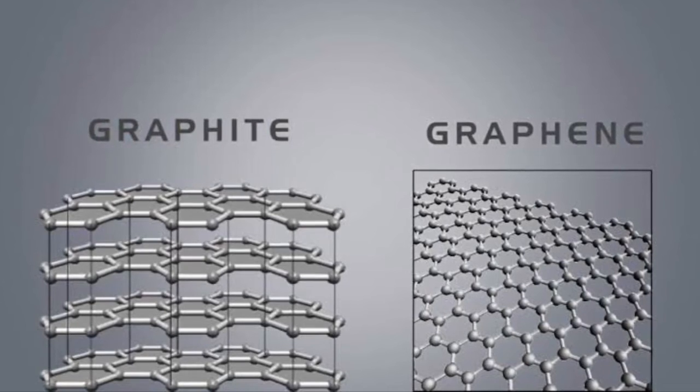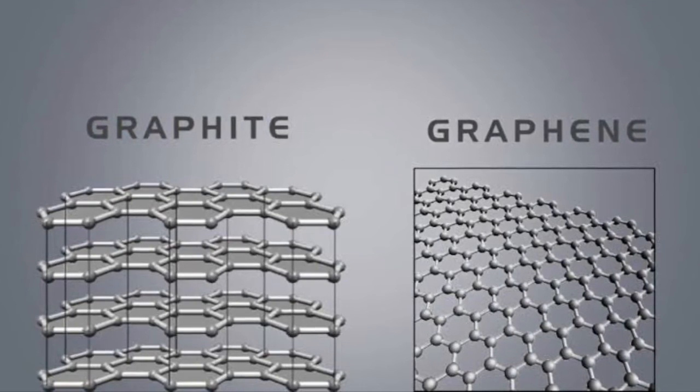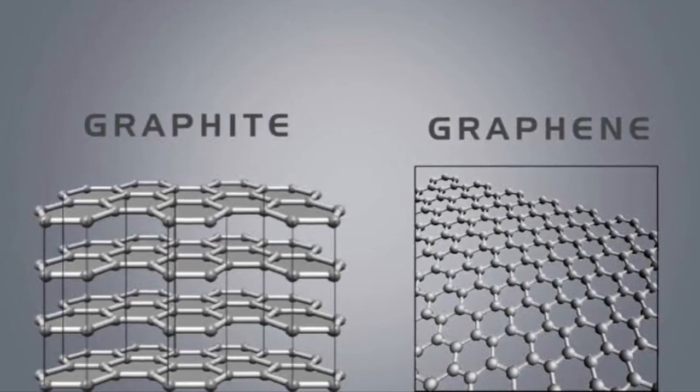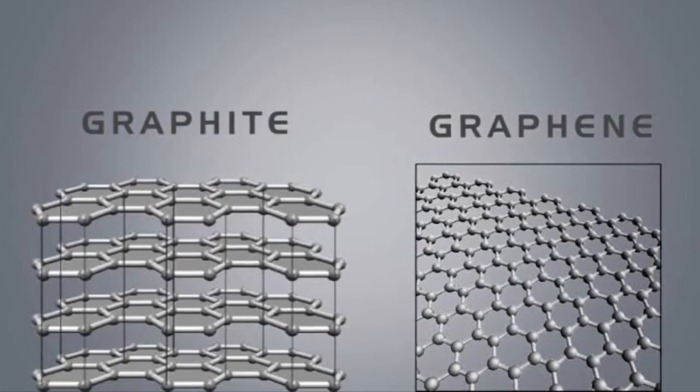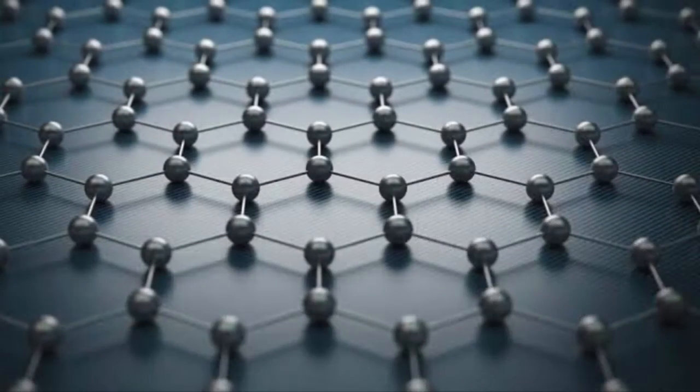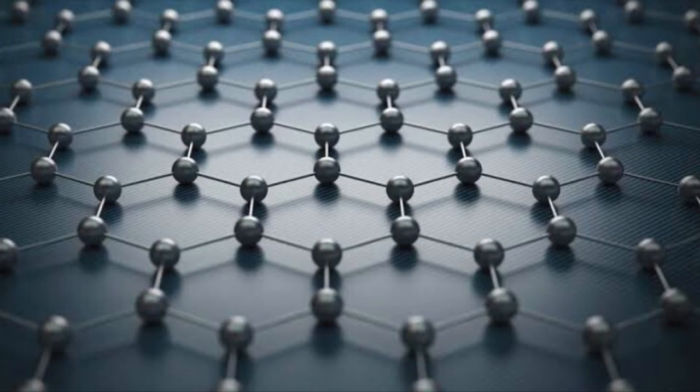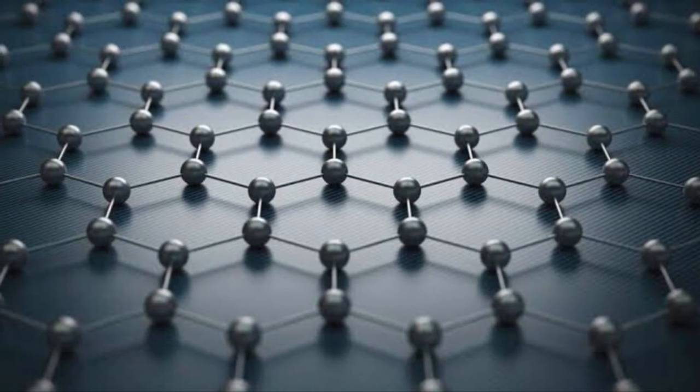Actually, graphite consists of thousands of layers of graphene, so by using tape we just peel off those layers and we get very few layers, and we can say that it is graphene.